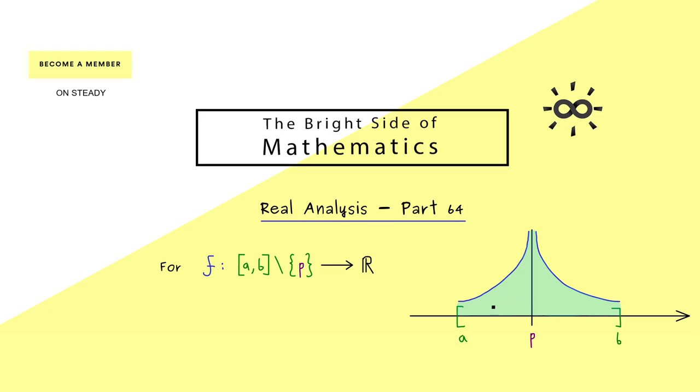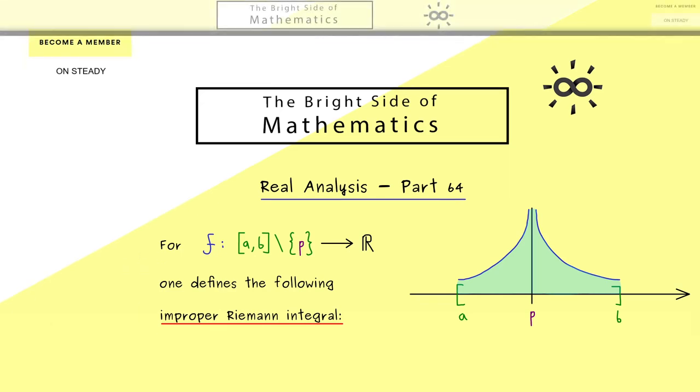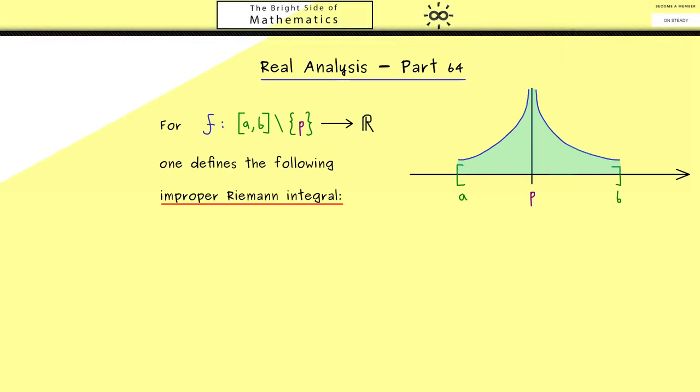Therefore the whole area is finite if both areas here are finite. This means that we can define an improper Riemann integral for f by using the definition from the last video. And then the integral symbol for the function f also makes sense.